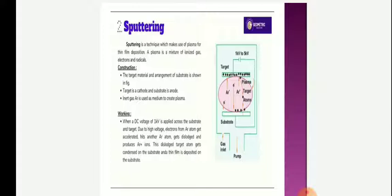Target is a cathode and substrate is anode. Inert gas argon is used as a medium to create plasma. Working: A DC voltage of 1 kV is applied across the substrate and target. Due to high voltage, electrons from an argon atom get accelerated, hit another argon atom, get dislodged and produce ions. The dislodged target atoms get condensed on the substrate and thin film is deposited.